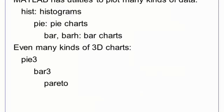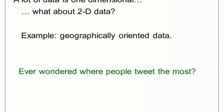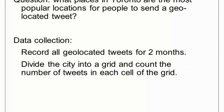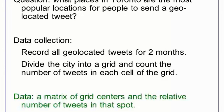MATLAB offers several other plotting utilities, including functions to make the standard pie and bar graphs. The hist function can be used to make histograms. If your data requires it, MATLAB can make many kinds of three-dimensional charts as well. Another way to visualize data is to treat a matrix as an image. In this example, we will examine a data set of public, geolocated Twitter messages near Toronto. We start with the question of from where in Toronto people are most likely to send a geolocated tweet. To answer this question, I recorded all geolocated tweets for two months in downtown Toronto, then divided the city into a grid and counted the relative number of tweets in each cell of the grid. The result is a data matrix where each point is the relative number of tweets near a grid center on the map. The simplest way to create an image in MATLAB is to call image and pass it a matrix.